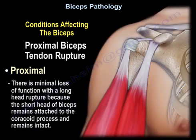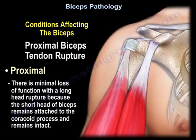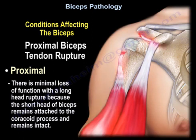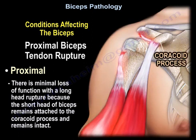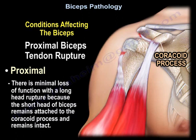With proximal biceps tendon rupture, there will be minimal loss of function, because although the longer head of the biceps ruptures, the short head of the biceps will remain attached to the coracoid process.